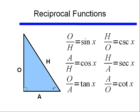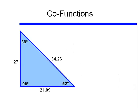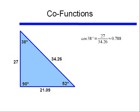Now instead of reciprocal functions, we're going to talk about something called co-functions. Consider a 90°, 38°, 52° right triangle with the given side lengths. If I wanted to look at cosine of 38 degrees, cosine equals the adjacent side divided by the hypotenuse, which in this case is 27 divided by 34.26, or approximately 0.788.